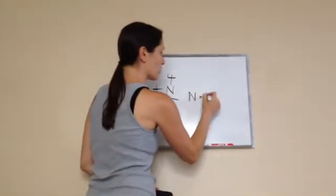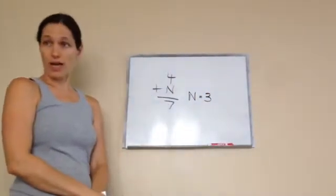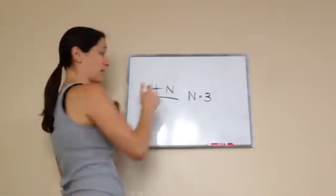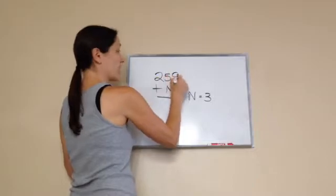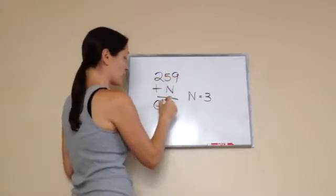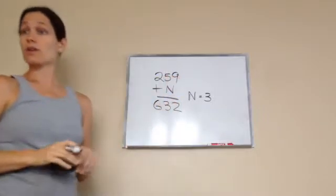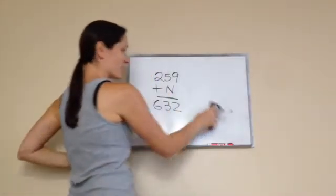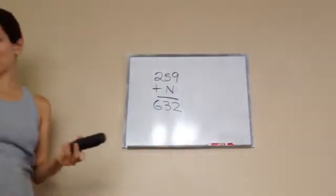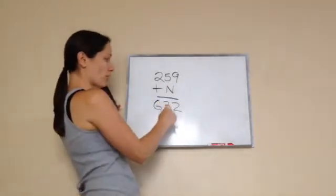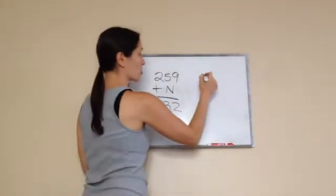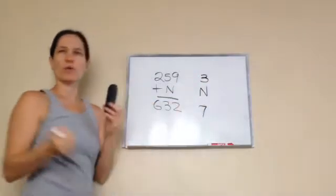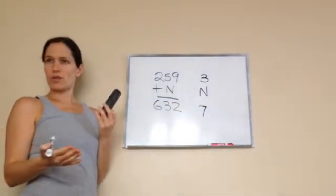But you're going to get much harder problems like 259 plus something equals 632. So it always helps me, and this might help you, to go smaller number, bigger number, smaller number, bigger number, and then try to think what did I do to figure this out.